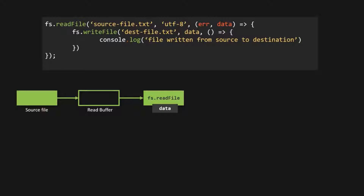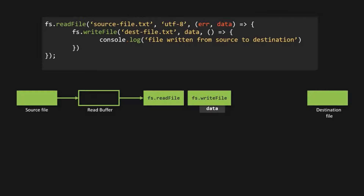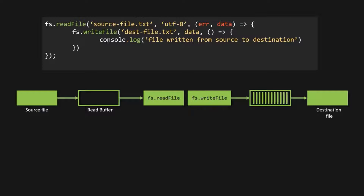Now we want to write the content from the data variable into another file. For that, we need to use the write file method. We want to write the data to a destination file. When we use the write file method, it creates a write buffer in between, then writes all the data into that buffer, and from that buffer the data is written to the destination file — all at once. The write file method writes all the data in the buffer at once and then that data is written to the destination file.